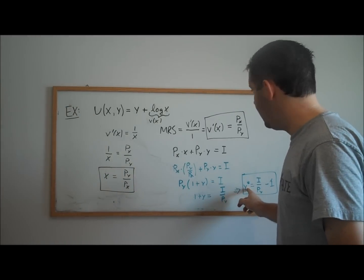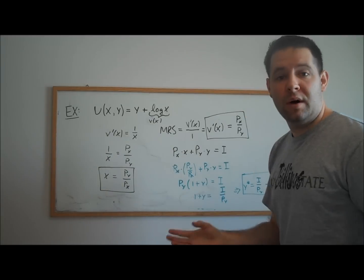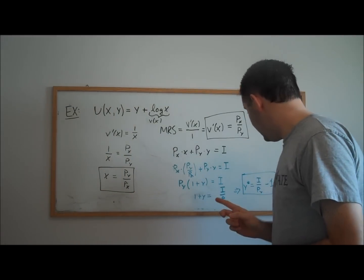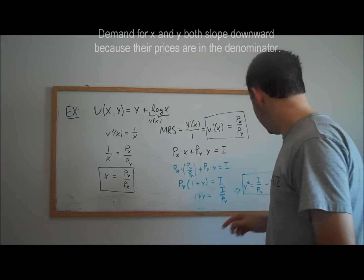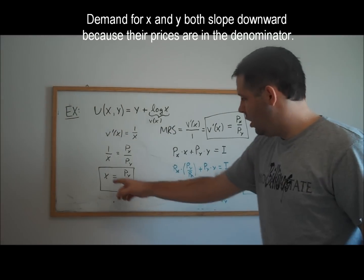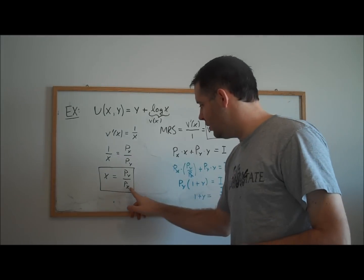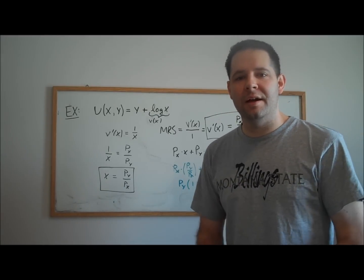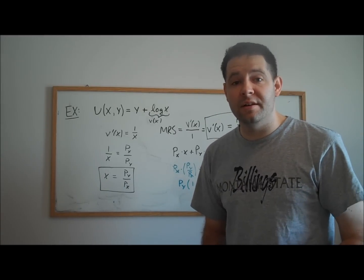This is the linear part of the quasi-linear demand curve. This linear part, it turns out, actually has a nice downward sloping demand curve. Also the quasi part has a nice downward sloping demand curve. So that's quasi-linear utility and how to get a demand curve from quasi-linear utility.